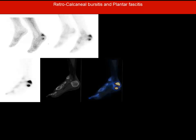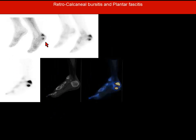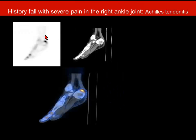Rizwan will talk about the bursas and the changes seen on CT as well as MRI. Next, a patient with a history of fall and severe pain in the right ankle joint. There is a focal uptake similar to what we saw previously, but it localizes to the Achilles tendon insertion, so it was called Achilles tendon enthesopathy.